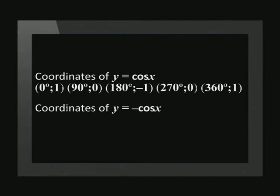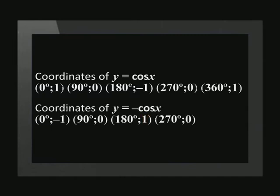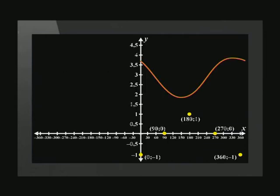The new coordinates are (0, -1), (90, 0), (180, 1), (270, 0), (360, -1). Let's plot them on the set of axes. First we plot the points, and then draw the line.